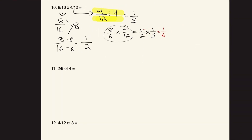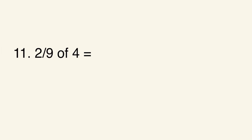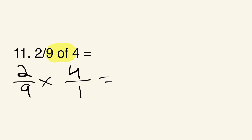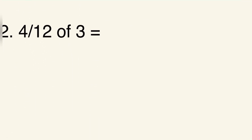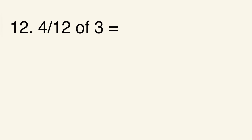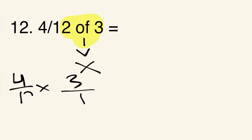The next example is two ninths of four — multiplying a fraction by a whole number again. Remember 'of' means multiplication, so this is two ninths times four over one. Two times four is eight, nine times one is nine, giving us eight ninths. The last example is four twelfths of three, which means four over twelve times three over one, giving us twelve over twelve, which equals one.